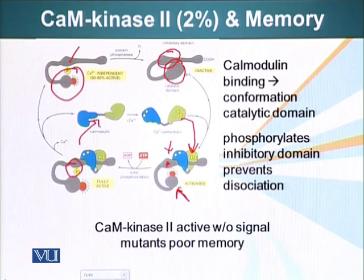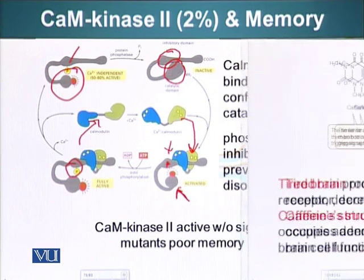Experiments have also shown that when CAM kinase 2 is mutated in mice, they have poor memory. This further suggests that CAM kinase 2 is an important protein in storing memory.